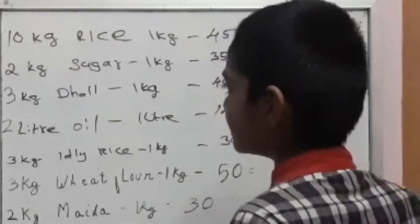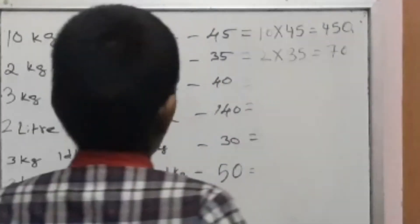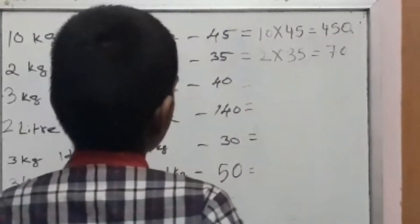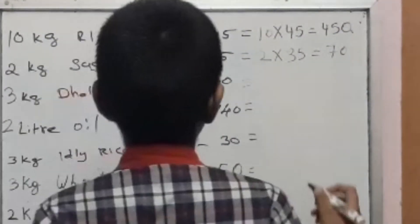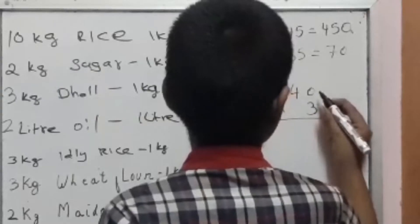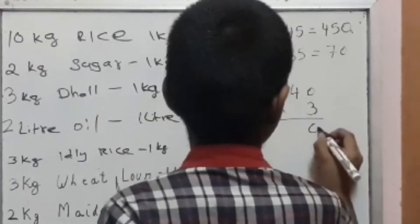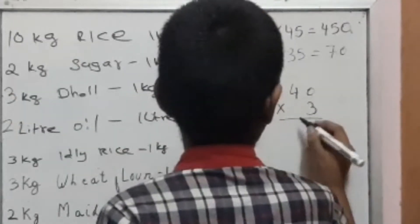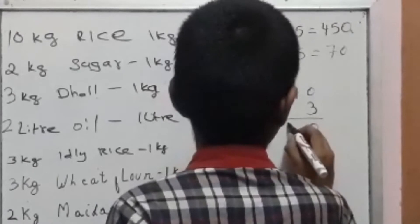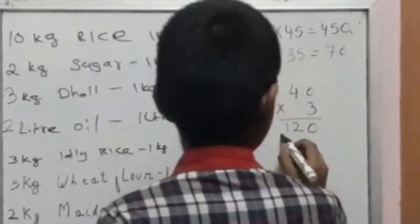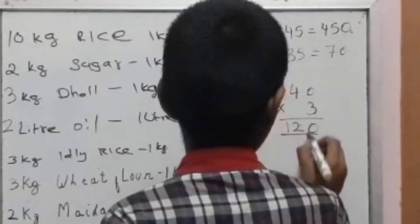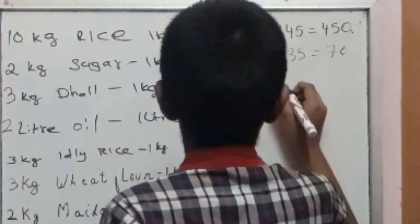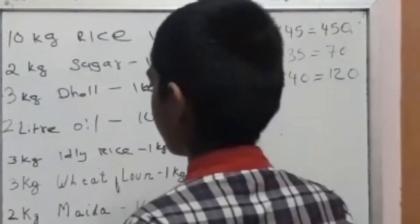3 kg, 1 kg equal to 40. 3 into 40. 3 into 0 is 0. 3 fours are 12. The answer is 120.